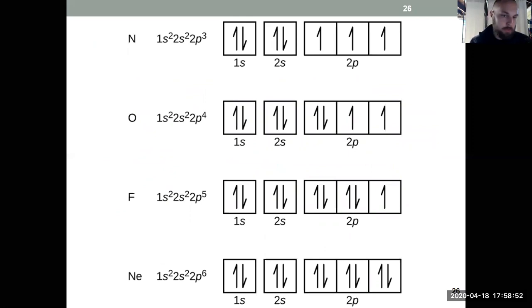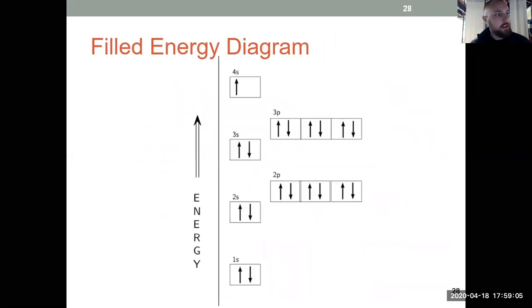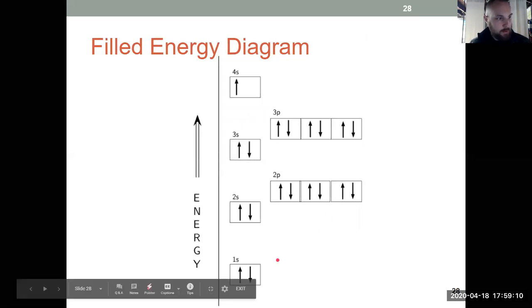So we could represent those orbital diagrams with boxes. We saw orbital energy diagrams as well. Notice energy there on the y-axis. The further out they get from the nucleus, the higher energy they become. Here I see an example of a filled energy electron diagram, filling the Aufbau principle from the bottom up to the highest energy.